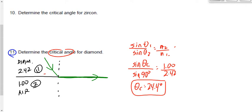Somebody asked a good question: can you get total internal reflection between diamond and glass as opposed to diamond and air? Sure you can, as long as you're going from a high index of refraction to a low index of refraction. What you'll notice is that the bigger the difference in index of refraction, the smaller the critical angle.